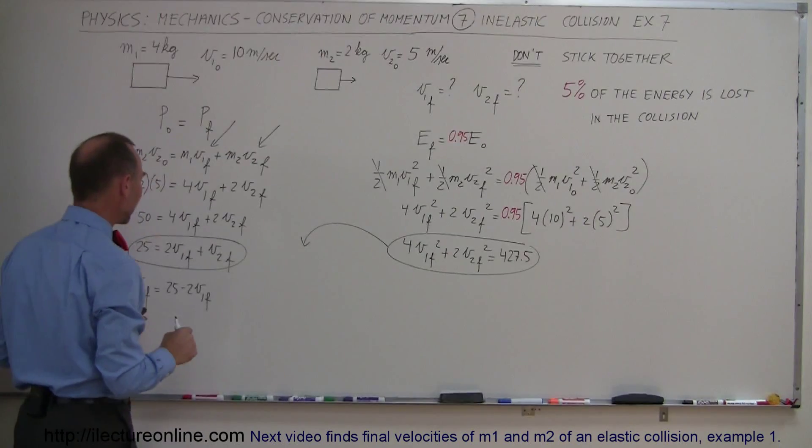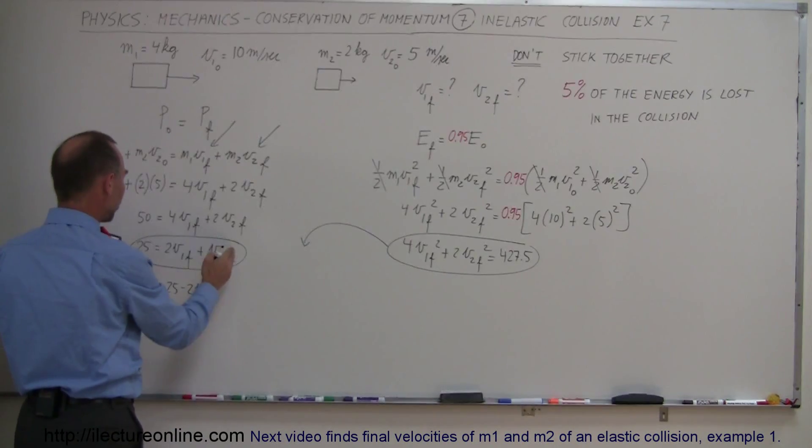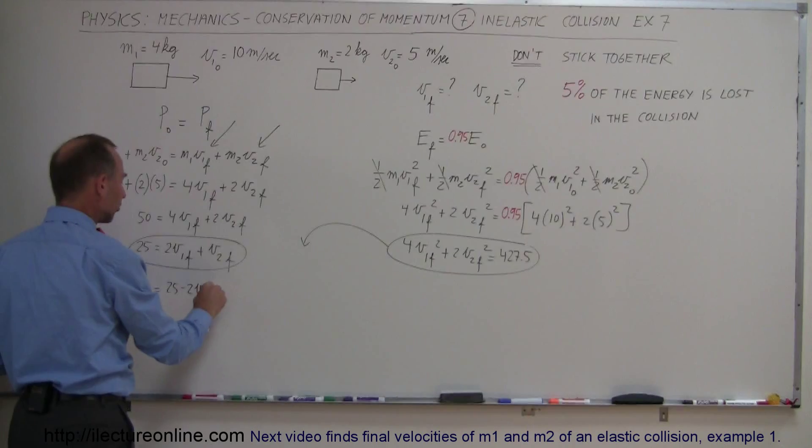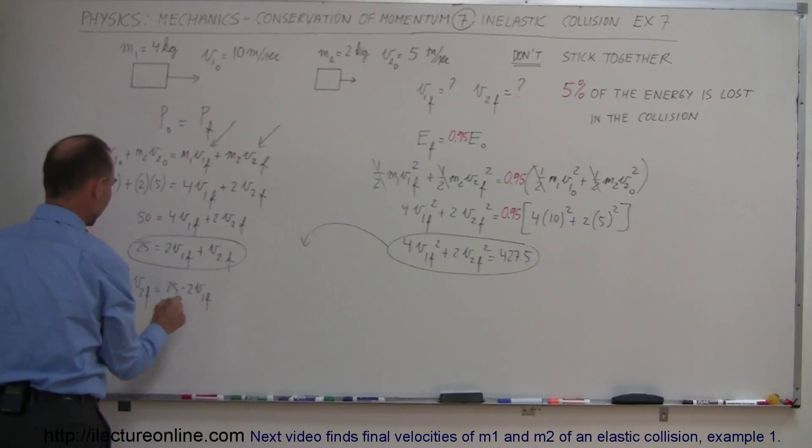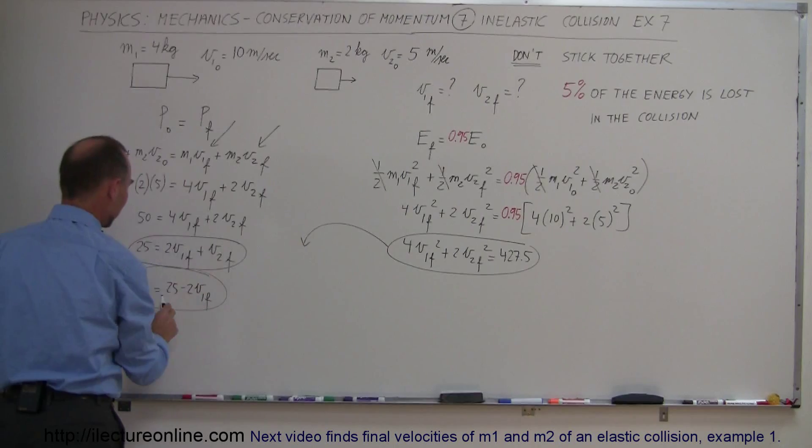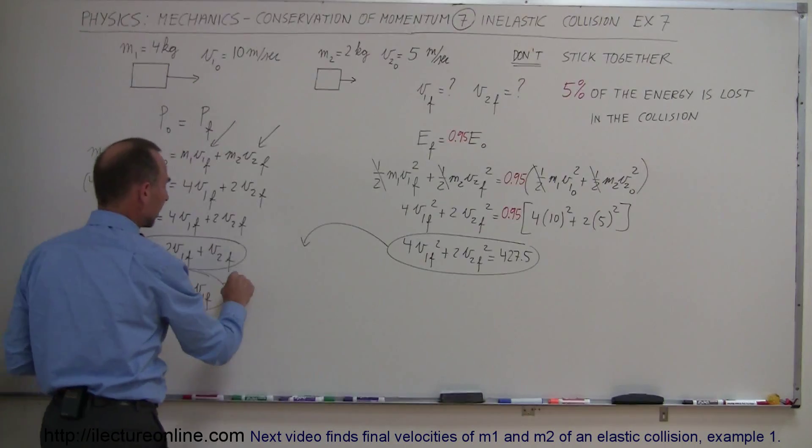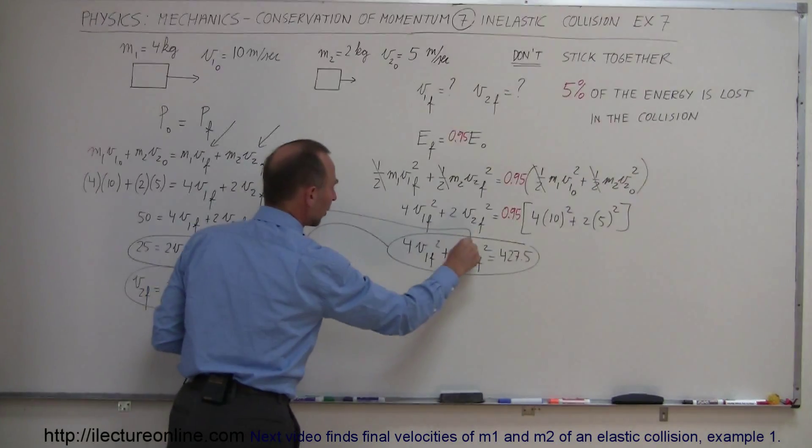Now to solve that problem what we have to do is solve this equation for one of the two unknowns and now substitute that into the second equation. So what I did was I solved V2 final in terms of V1 final and then we'll substitute that in here, there.